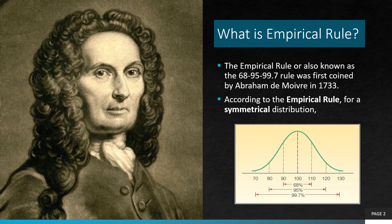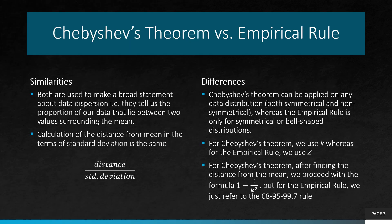This relationship can be portrayed by the diagram as shown. Now, let's take a look at the differences and similarities between Chebyshev's theorem and the empirical rule. First, both are used to make a broad statement about data dispersion — that is, they tell us the proportion of our data that lie between two values surrounding the mean. But while Chebyshev's theorem can be applied on any data distribution, the empirical rule can only be applied to symmetrical, or bell-shaped, distributions.